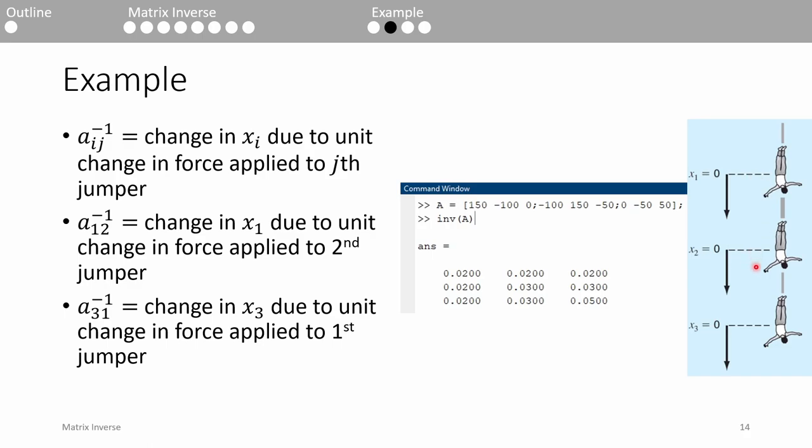However, for the second jumper, the elongation is now 0.03 meters because along with the first cord, the second cord also elongates due to the additional force. And of course, the third jumper displaces just as much as the second jumper because there's no additional force on the third cord that connects them.